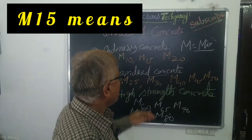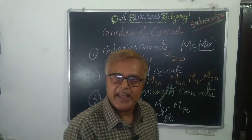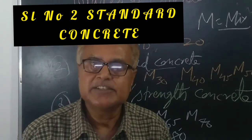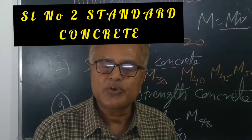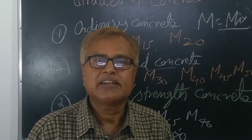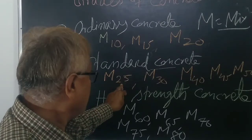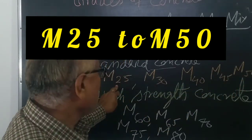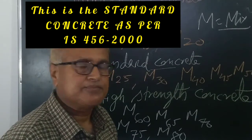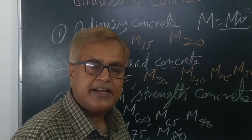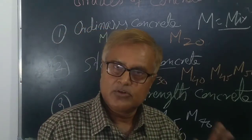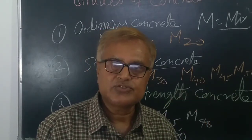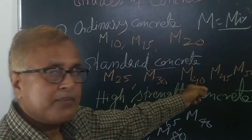M15 means 15 MPa per Newton per square mm strength. Standard concrete is where the specification is controlled. Through mix design in the lab, trial mixes are done to achieve the required strength. M25 to M50 — specifically M20, M30, M40, M45, M50 — fall under standard concrete. For this category, aggregate sizes, grading, coarse sand particle sizes, grade of cement, and water-cement ratio are all specified.